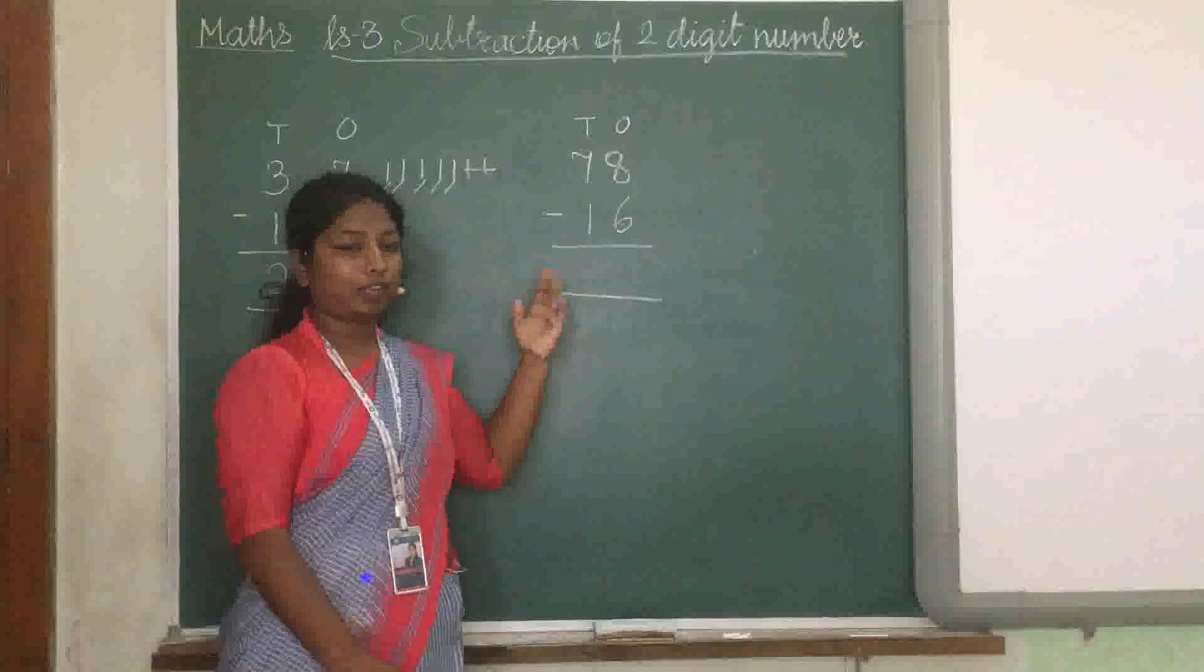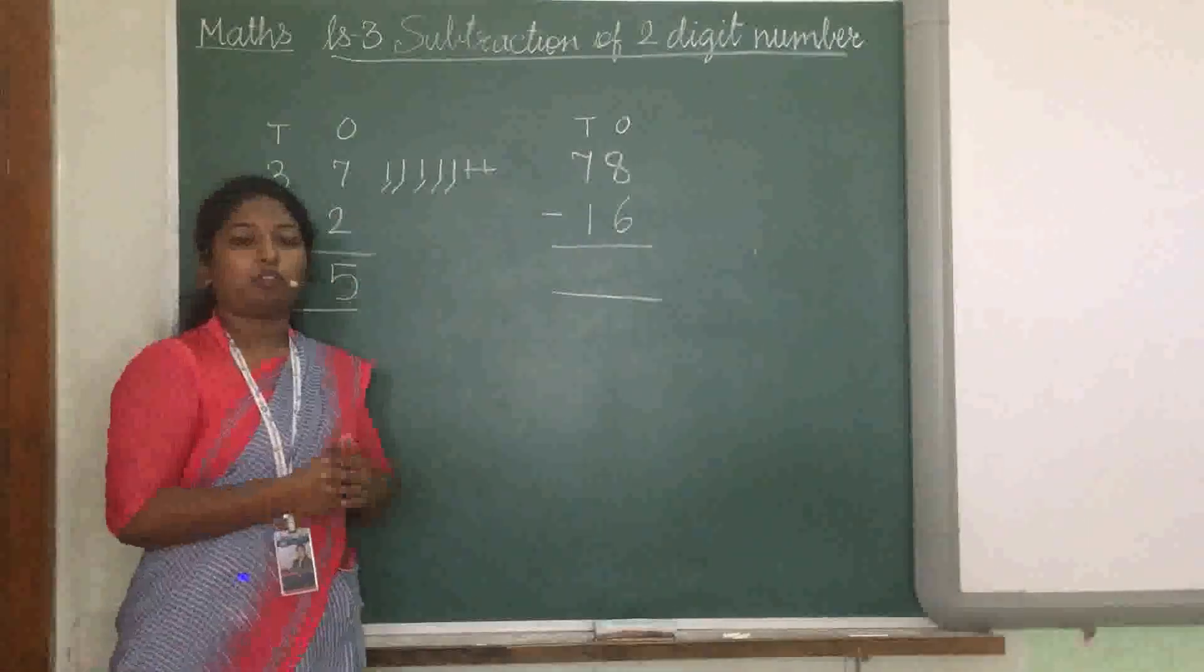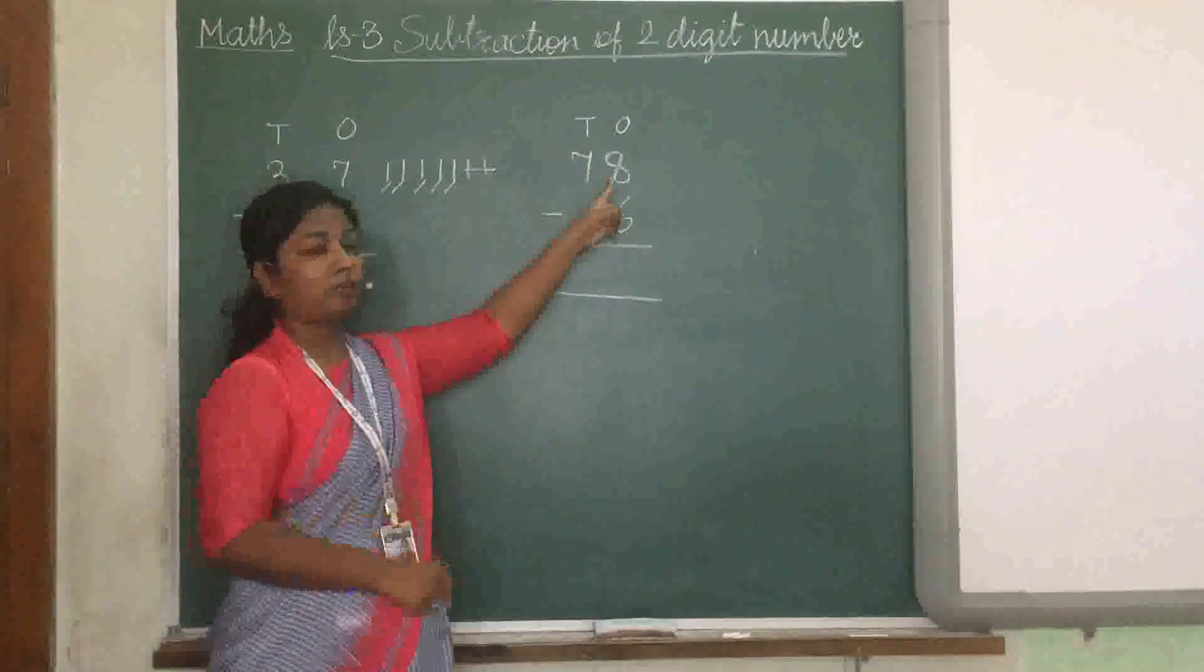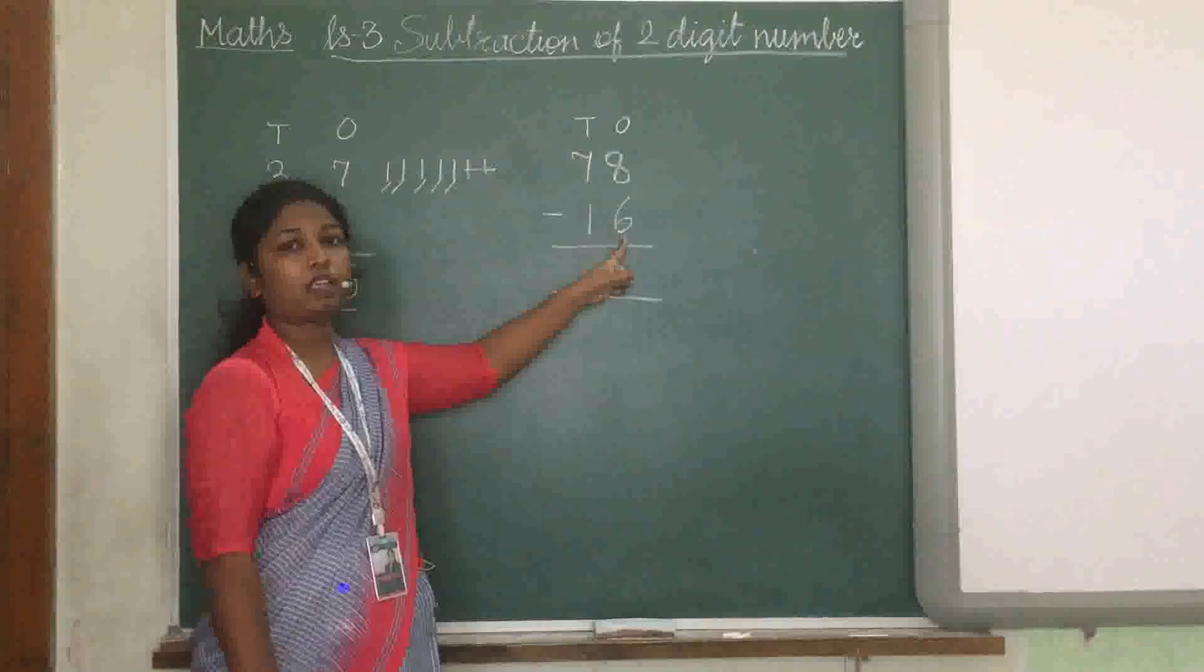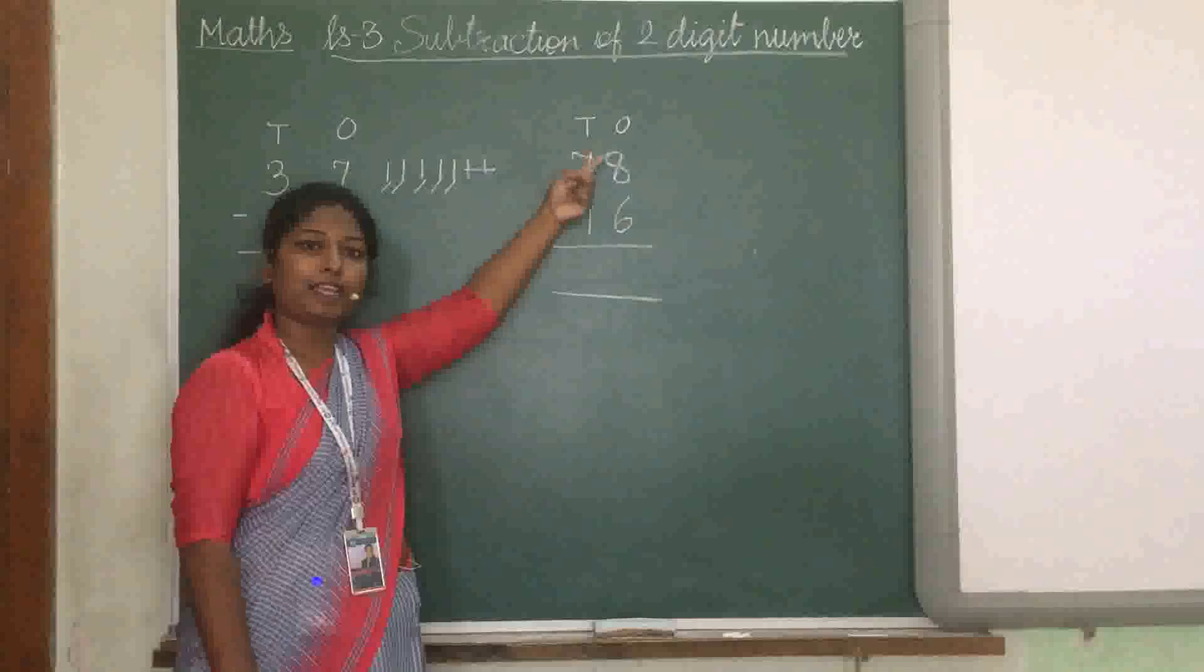Now we can also solve this orally. Orally how to do that? If we do it orally, it takes very less time. So how to do it? We have to see the first number 8 and the next number is 6. So we have to count forward from 6 till 8.